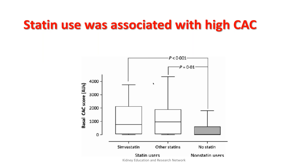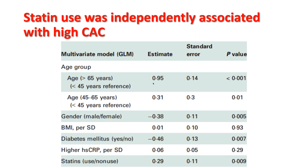The key finding: they looked at basal coronary artery calcification scores in patients taking statins. Since the largest proportion was on simvastatin, they separated simvastatin users into one group, patients on other statins into another group, and the third group was non-statin users. They showed that coronary artery calcification scores were higher in subjects taking any type of statin — an important finding given that coronary artery calcification is associated with worse long-term mortality. Multivariate analysis showed that the factors independently associated with increased baseline coronary artery calcification were older age, sex, diabetes, and statin use.